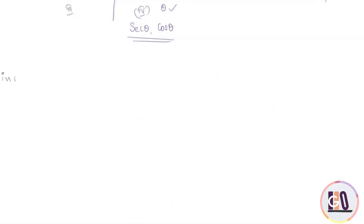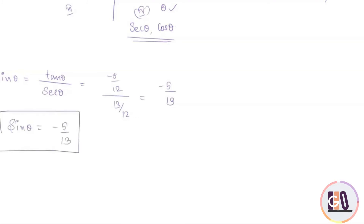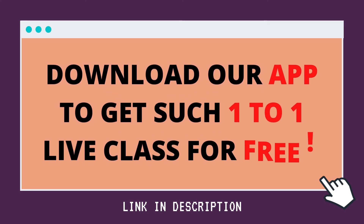To find sin θ: sin θ equals tan θ divided by sec θ, which is minus 5 by 12 divided by 13 by 12, equal to minus 5 by 13. Therefore sin θ equals minus 5 by 13.